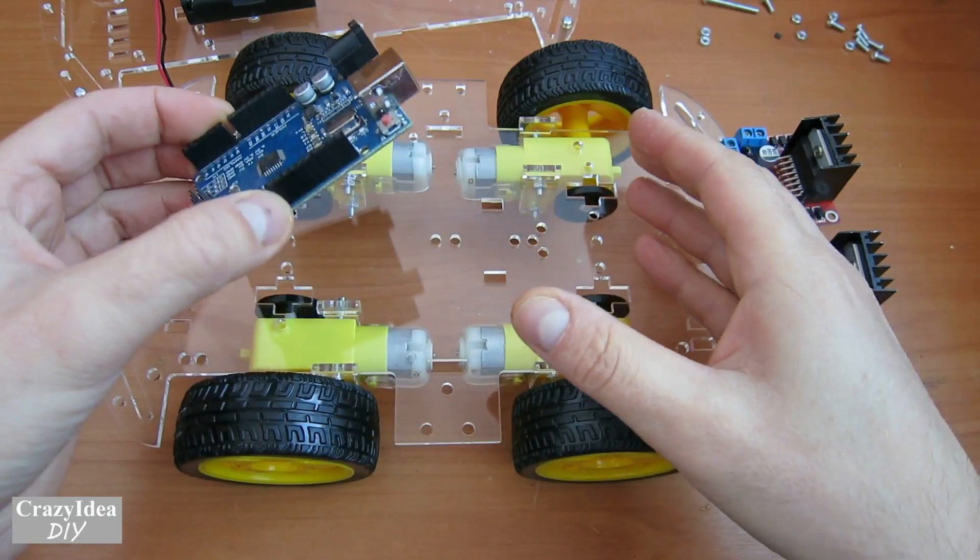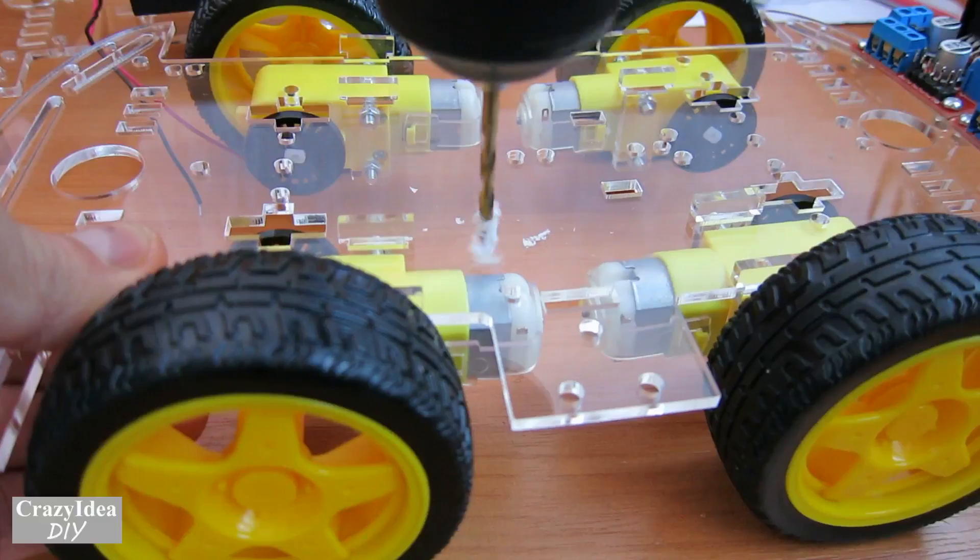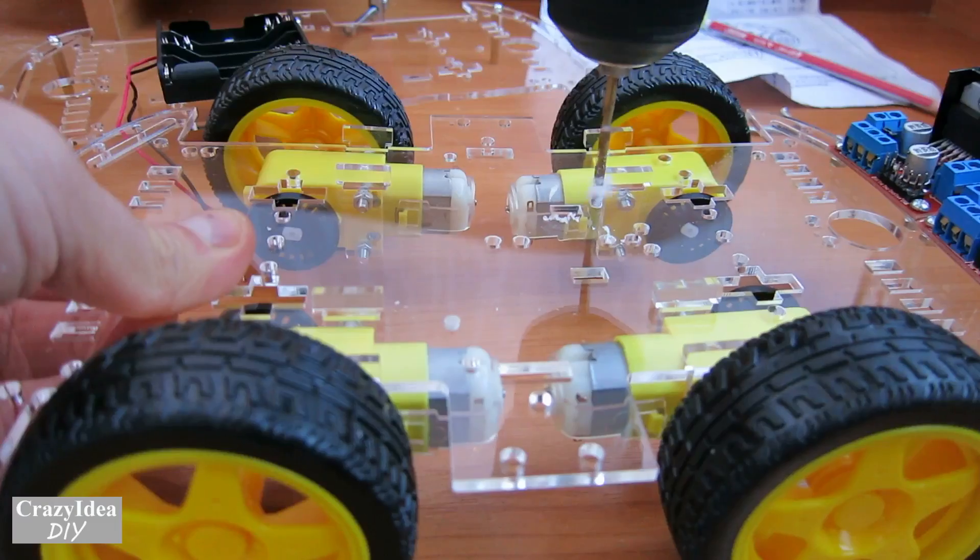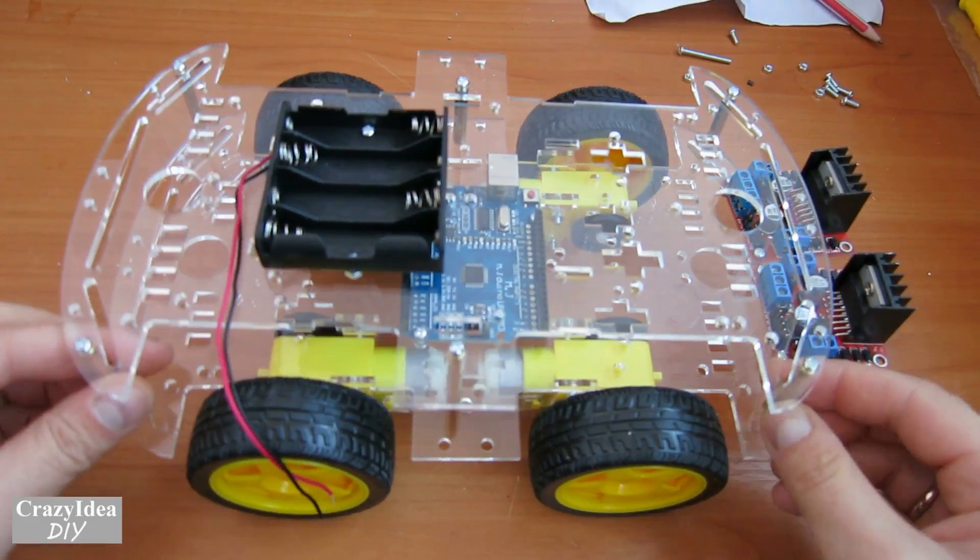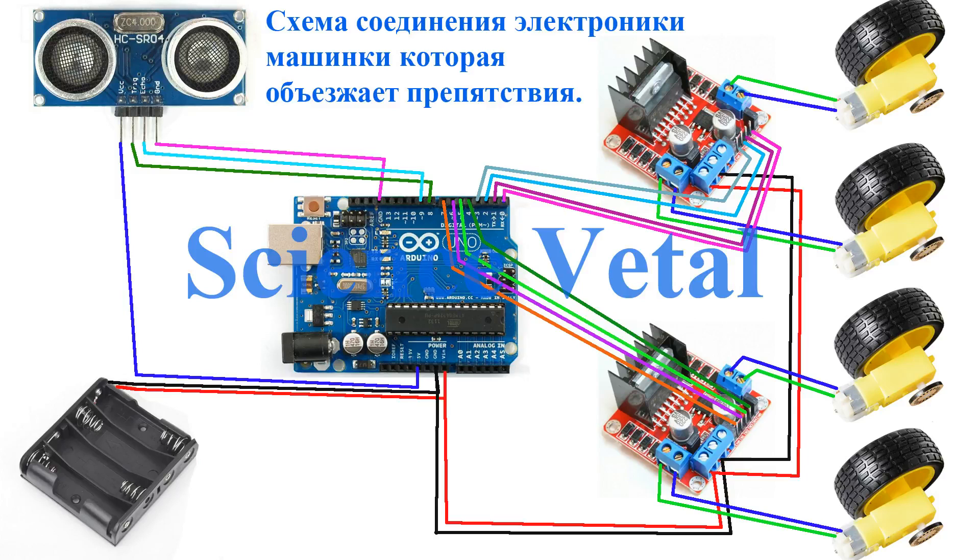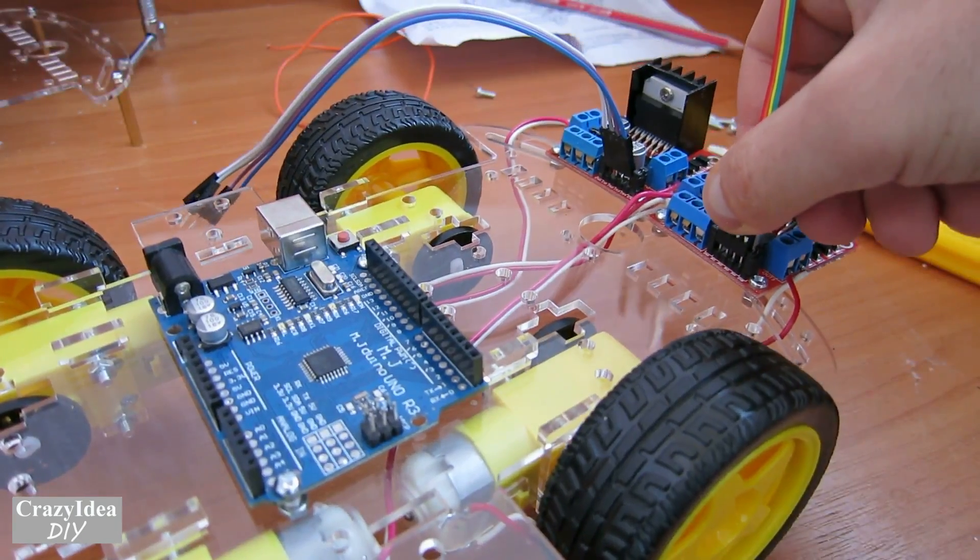I like everything in this set, but there are no holes to screw the Arduino Uno. But before you attach the cap, it is necessary to connect the wires.